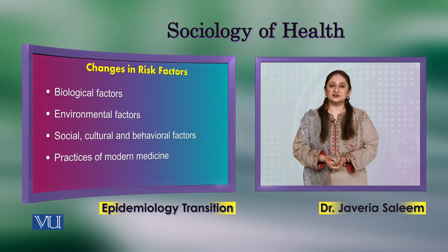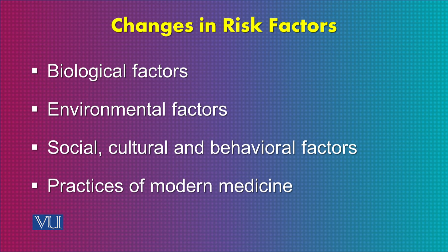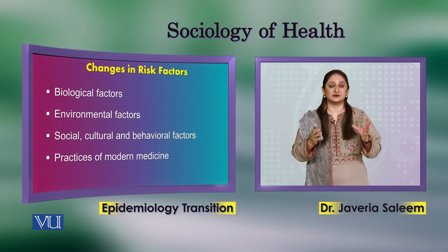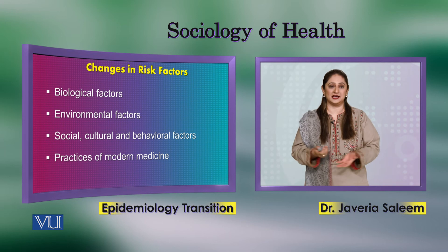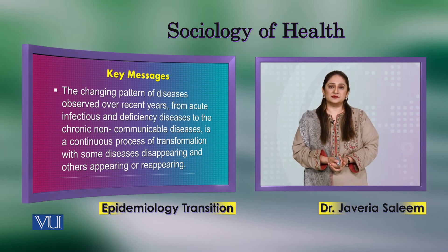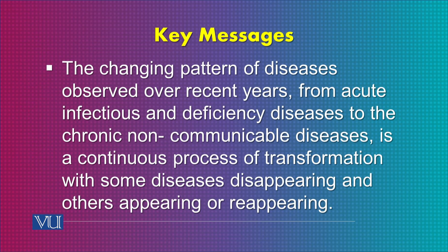The risk factors responsible for epidemiological transition include biological factors, environmental factors, social-cultural and behavioural factors, and the practice of modern medicine. The key message from this session is that the changing pattern of disease observed over recent years — from acute infectious and deficiency diseases to chronic non-communicable diseases — is a continuous process of transformation, with some diseases disappearing and others appearing or reappearing.